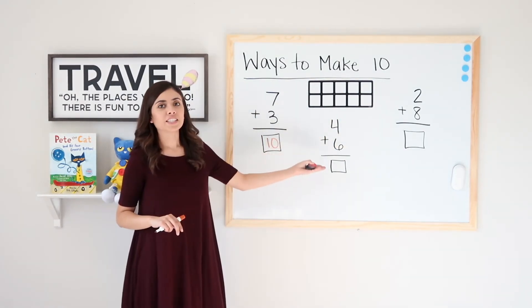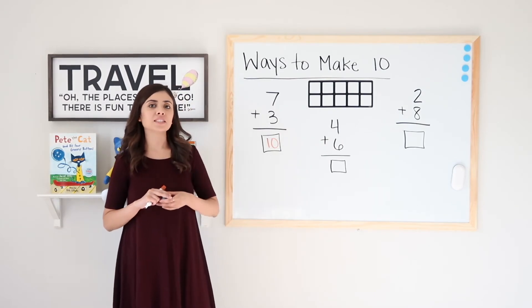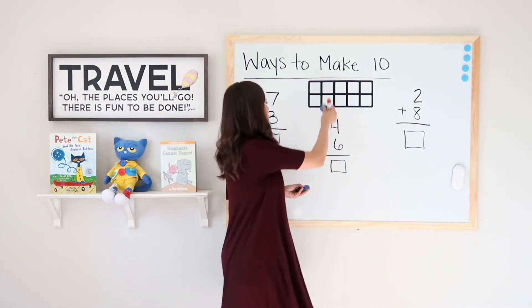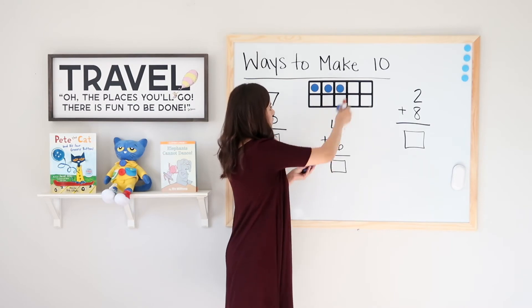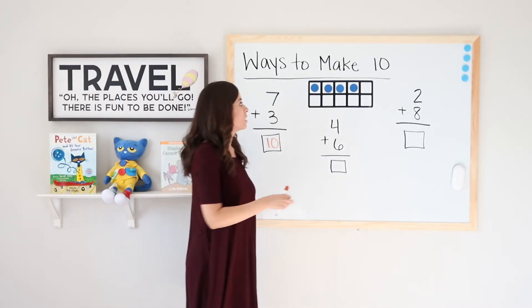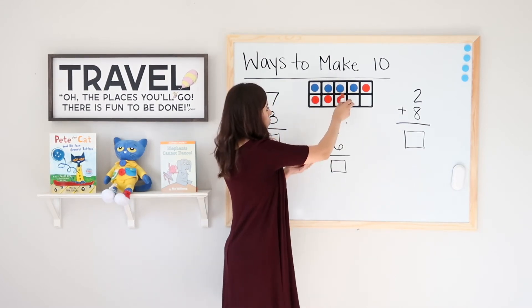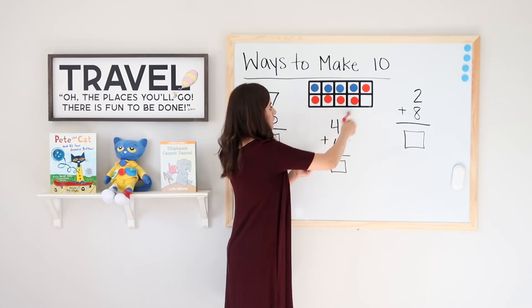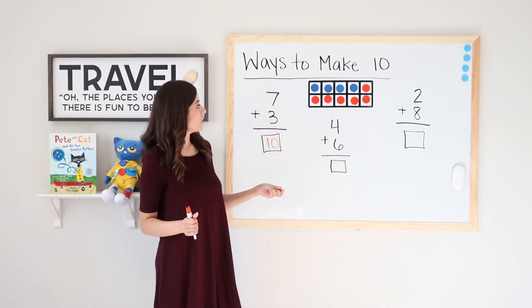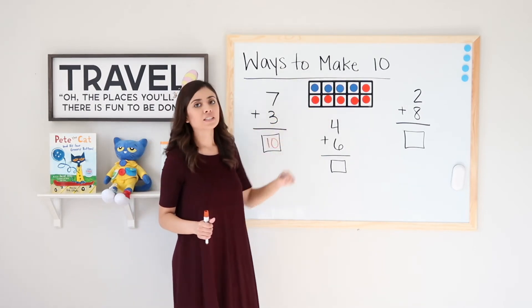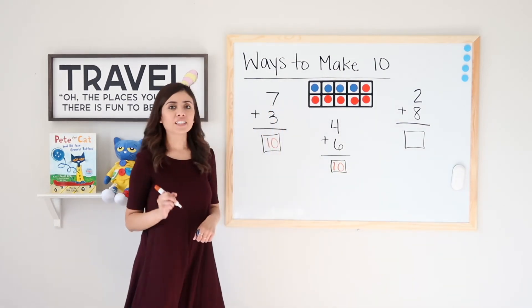Four plus six. I will start with four blue dots, add six red dots, and see how many I have total. One, two, three, four plus six red. One, two, three, four, five, six. Again, I filled up my ten frame. So that means that four plus six equals ten. Nice work.